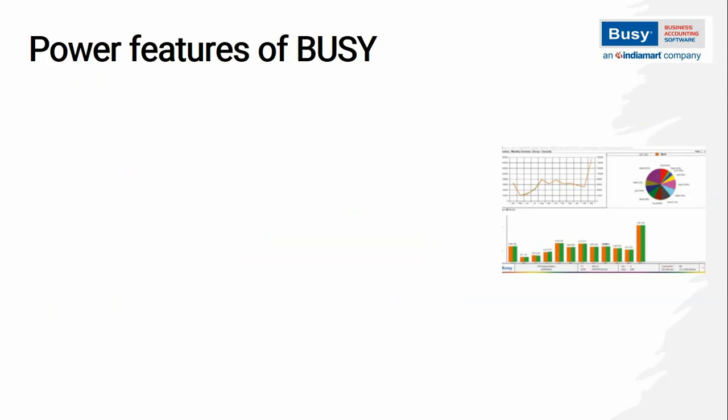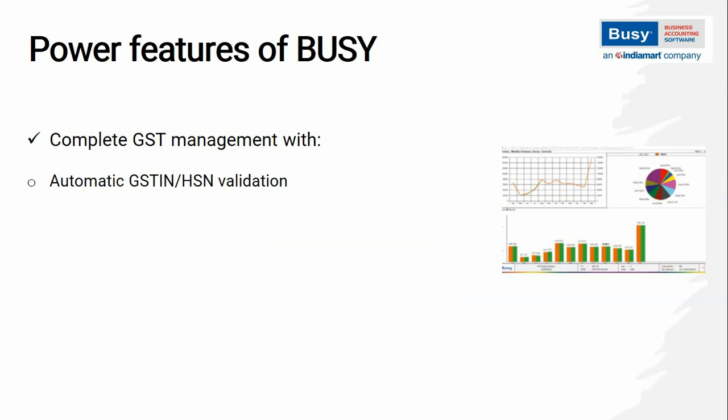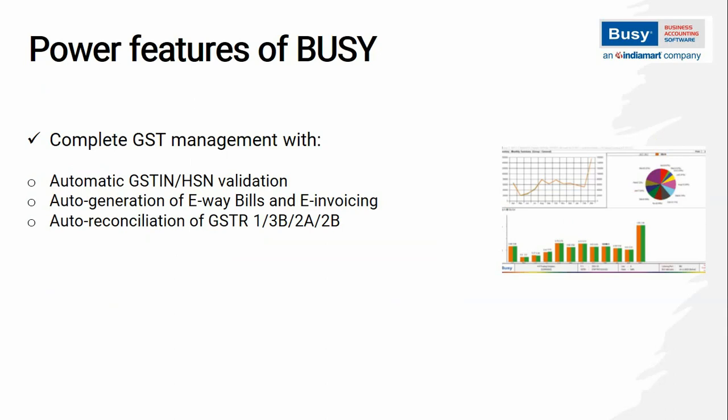Now let us discuss power features of Bizi. The GST part of Bizi is very powerful because GST solutions are available with automated features for GST compliance. For example, GST IR or HSN code can be validated online without going to the portal. E-bill and e-invoice can be generated automatically directly from Bizi. Auto-reconciliation of GSTR 1, 3B, 2A, 2B is available in Bizi. GST returns can be filed with just one click and many more.